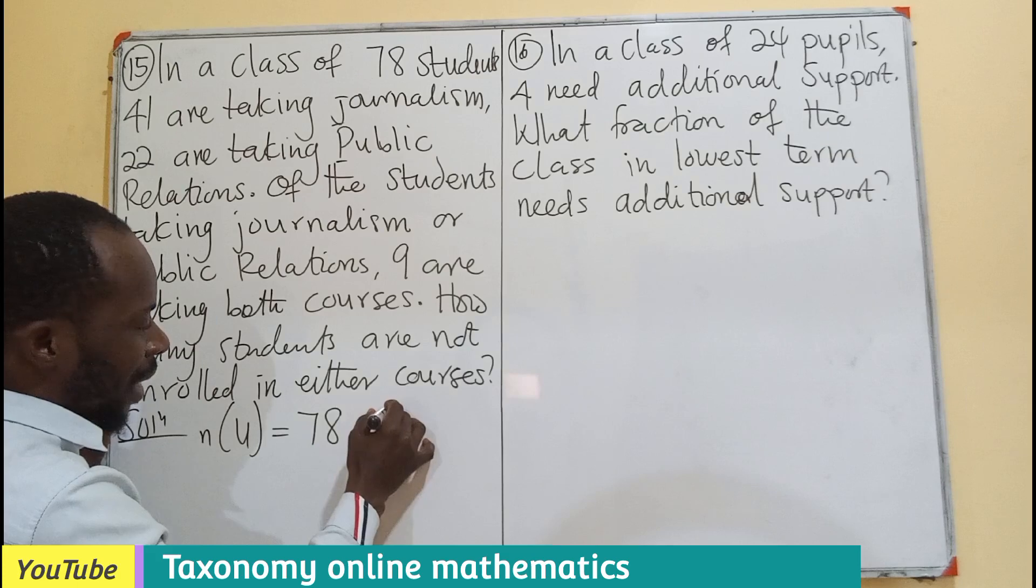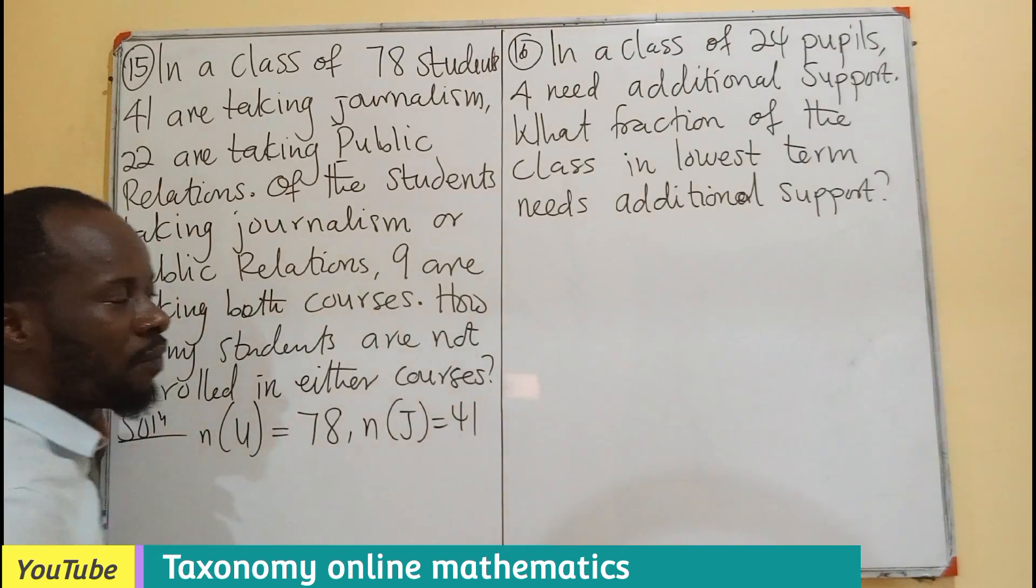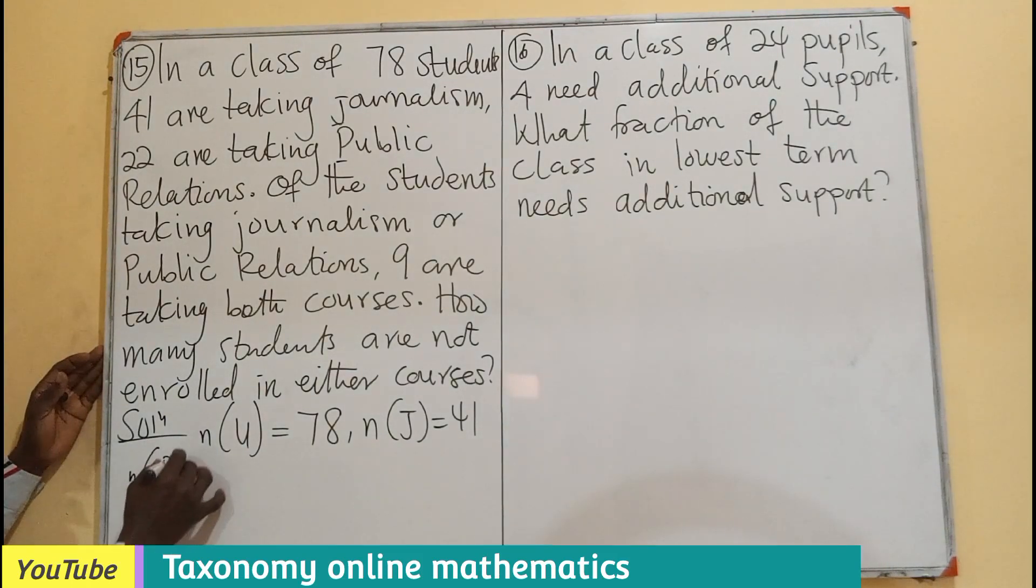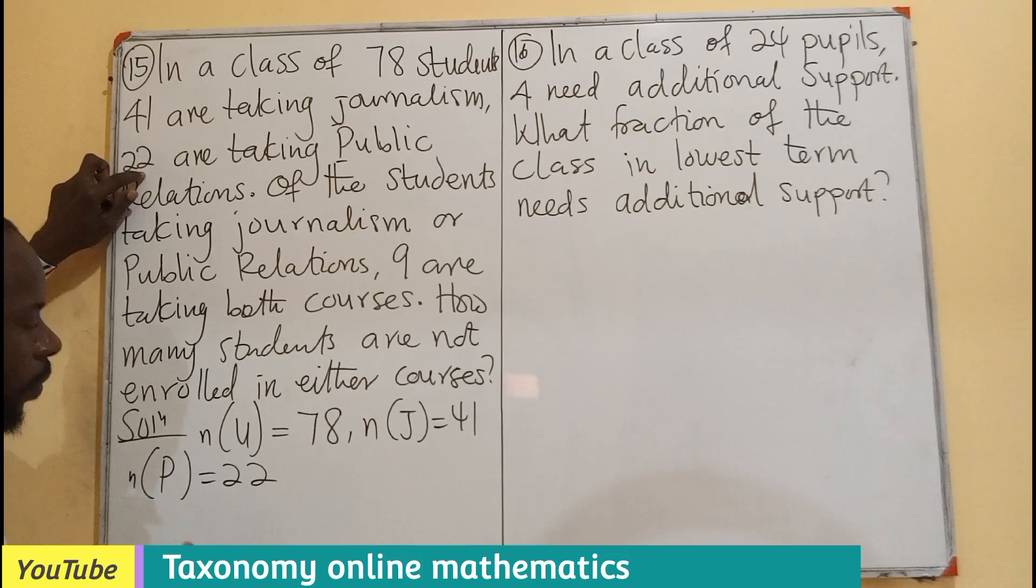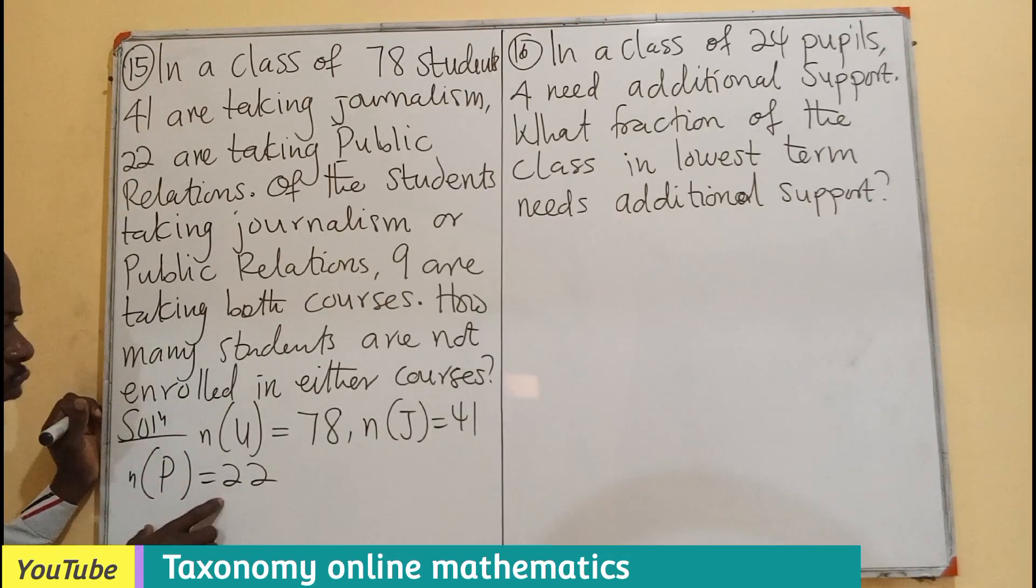Let's use J and P to represent the two subsets. I will be having number of journalism, which we have as 41. Then number of public relations is also given as 22.